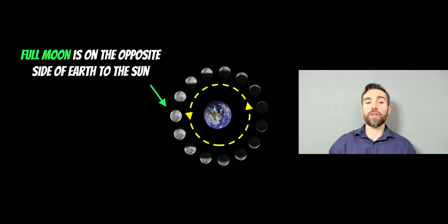So the full moon is when the moon is on the opposite side of Earth to the sun. So if it's on the opposite side of Earth to the sun, then the face facing towards the Earth is always going to be fully illuminated. And that would be a full moon.